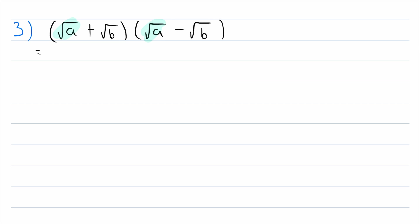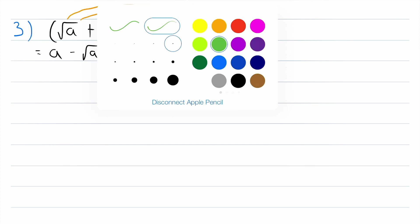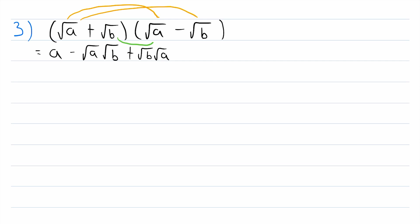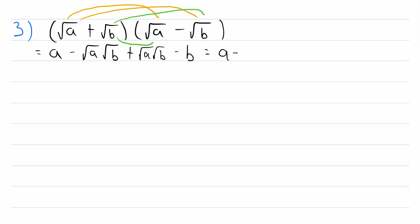Let's try that approach here. First, we multiply the square root of a by the square root of a — which is, by definition of square root, just a. Then square root of a times negative square root of b gives minus √a·√b. Then square root of b times square root of a gives plus √b·√a. And finally, square root of b multiplied by negative square root of b gives minus the square root of b squared, which is just minus b. To simplify, these two middle terms cancel out — we have minus √a·√b and plus √b·√a, and since the order of multiplication doesn't matter, those cancel, leaving us with a minus b.